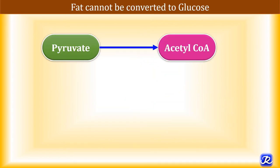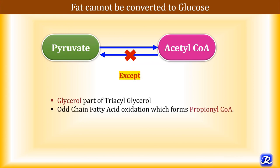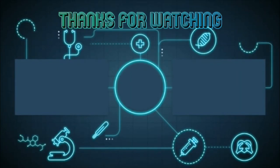Glucose can be converted into fats, but fat cannot be converted back into glucose. This is because the conversion of pyruvate to acetyl-CoA is irreversible. The only exceptions are the glycerol part of triacylglycerol and propionyl-CoA — the end product of odd-chain fatty acid oxidation — which can both undergo gluconeogenesis to form glucose.